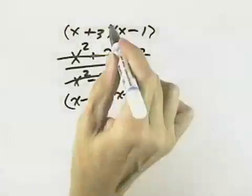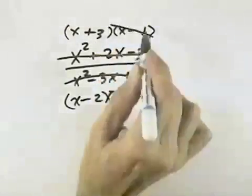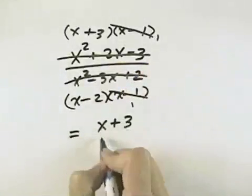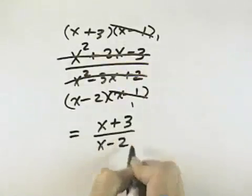We can see that there is a common factor of x minus 1, and that is, therefore, what we can cancel. And when we do, that leaves us x plus 3 in the numerator and x minus 2 in the denominator.